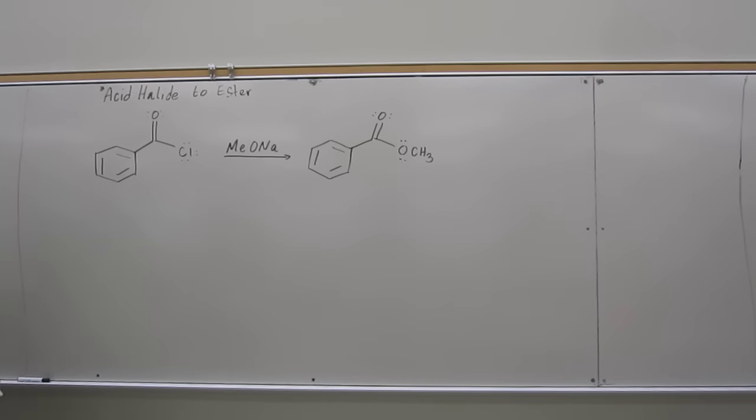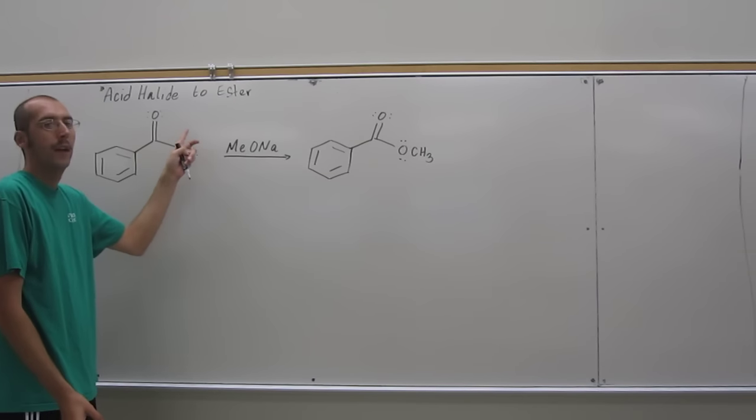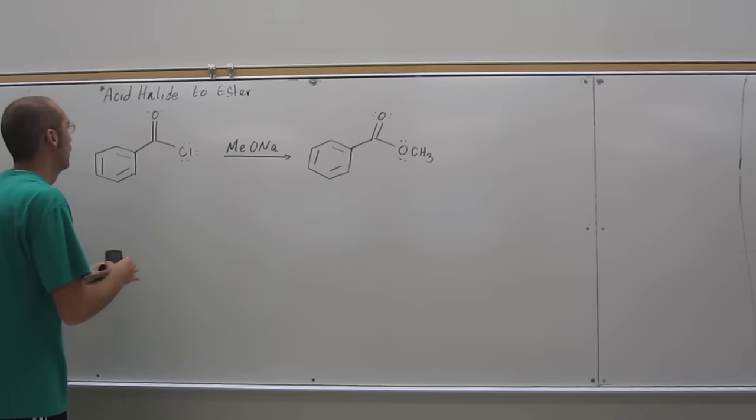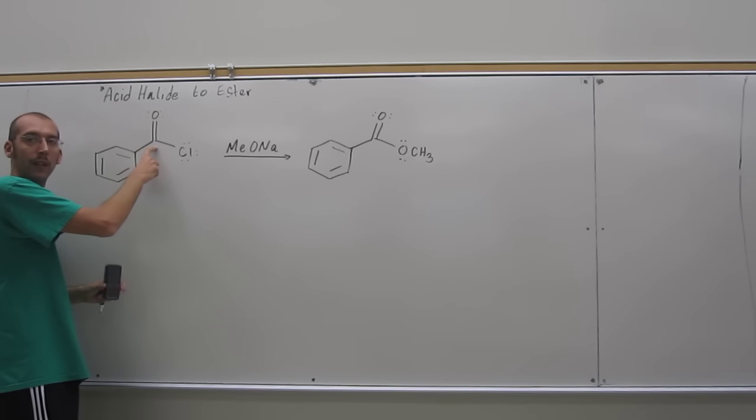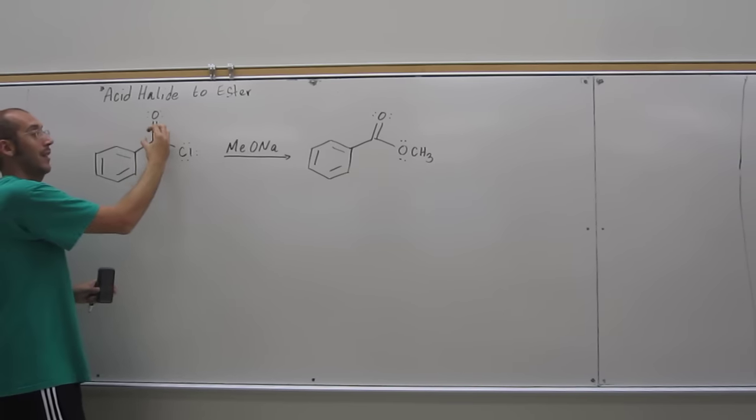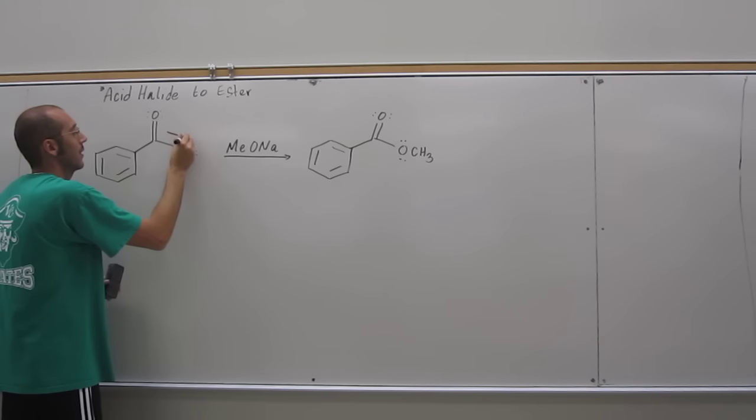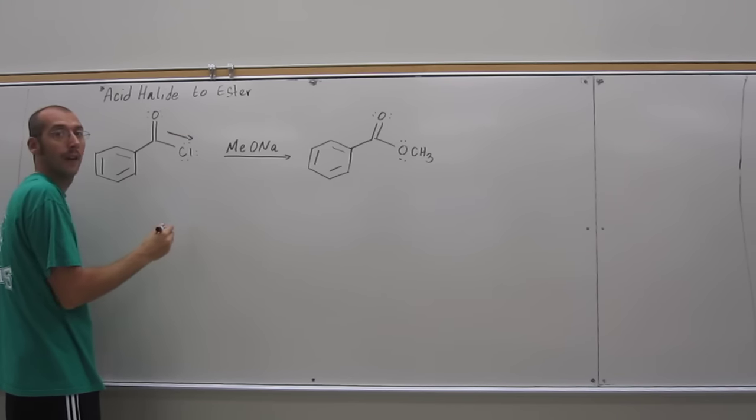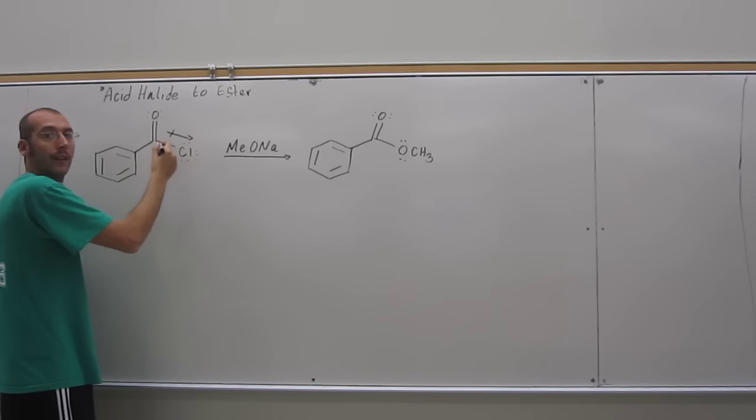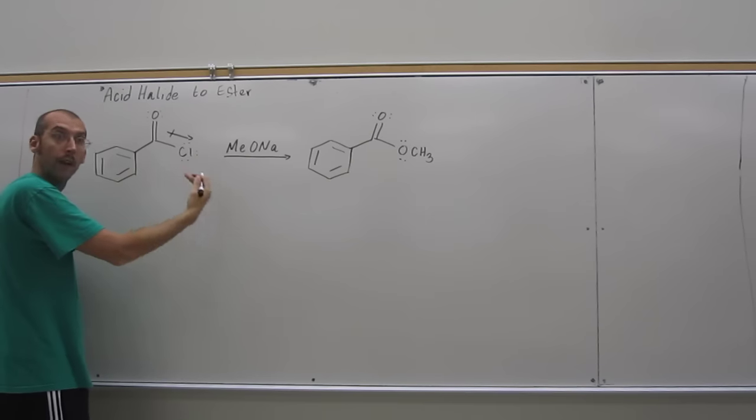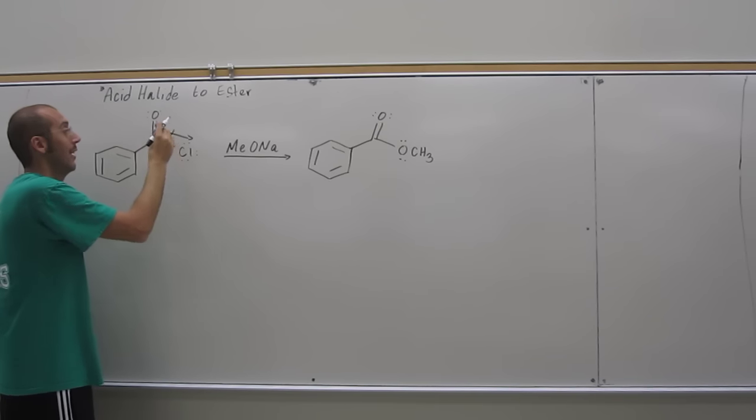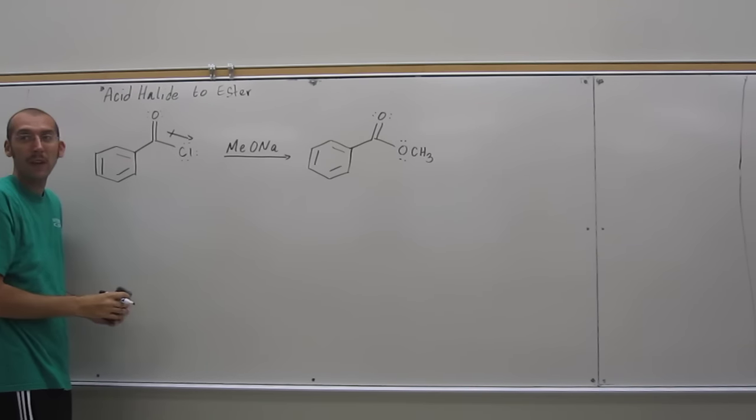So the one thing you want to remember is, most of these things will donate charge to that electrophilic carbon, right, but the reason we use acid chlorides is because they actually remove charge from it. So since the chlorine is more electronegative than that carbon, instead of donating like oxygens, carbons, or nitrogens do, it actually pulls it away, right, so that's making this even more positive.